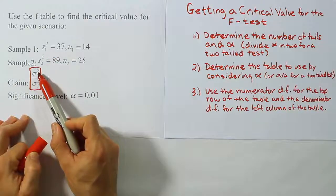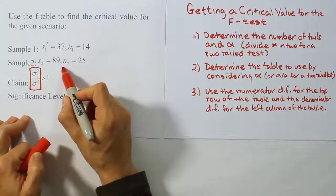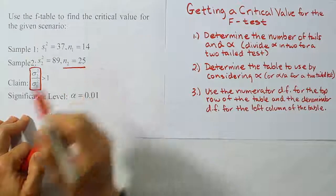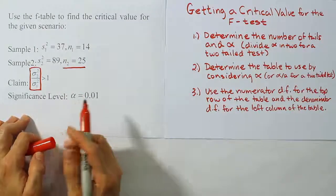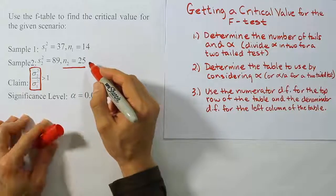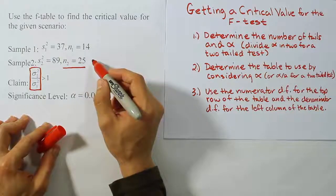And that ratio is essentially going to help us determine what's the numerator and what's the denominator. So the fact that we have the second population on top, it means that we will use this guy here as our numerator degrees of freedom. Of course, we're going to take one away from it like we normally do. So the degree of freedom here is going to be 24.